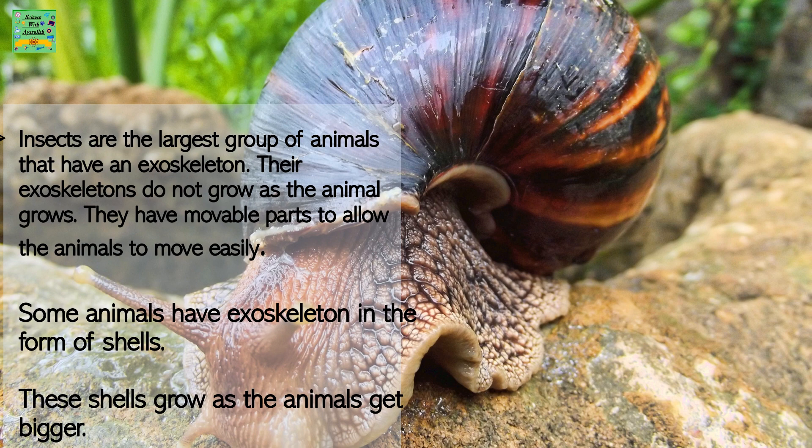Insects are the largest group of animals that have an exoskeleton. Their exoskeletons do not grow as the animal grows, but they have movable parts to allow the animal to move easily. Some animals have exoskeletons in the form of shells, and these shells grow as the animal gets bigger — for example, tortoises or snails.